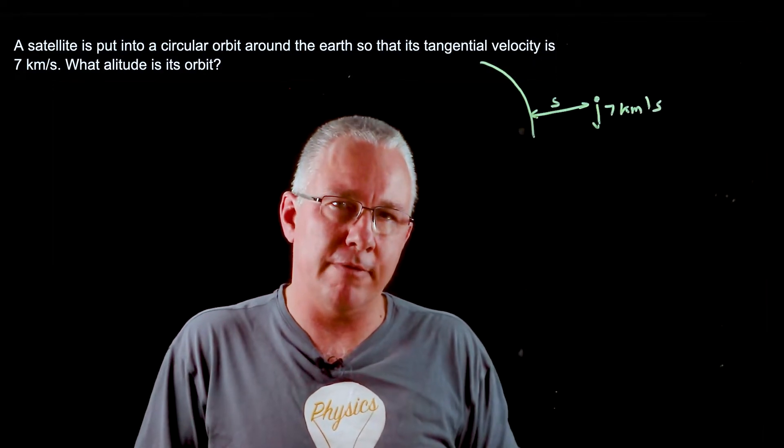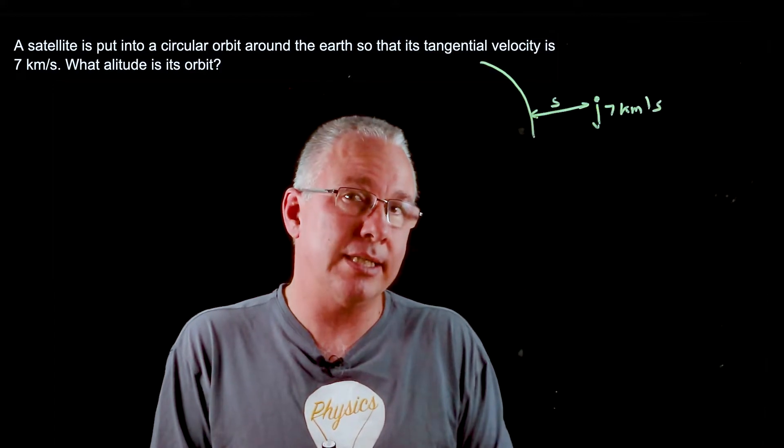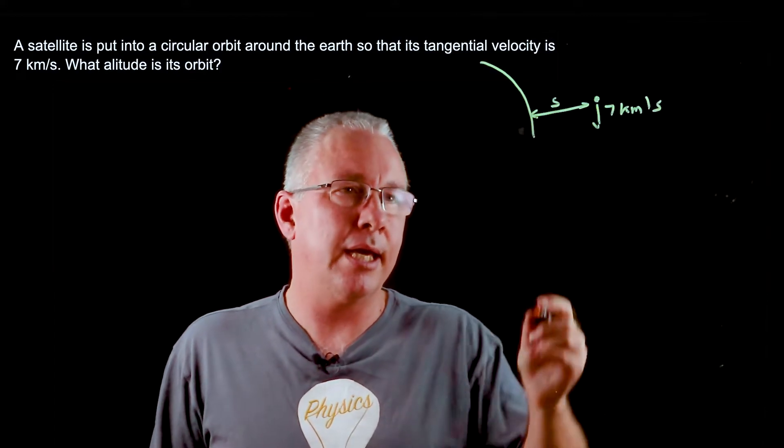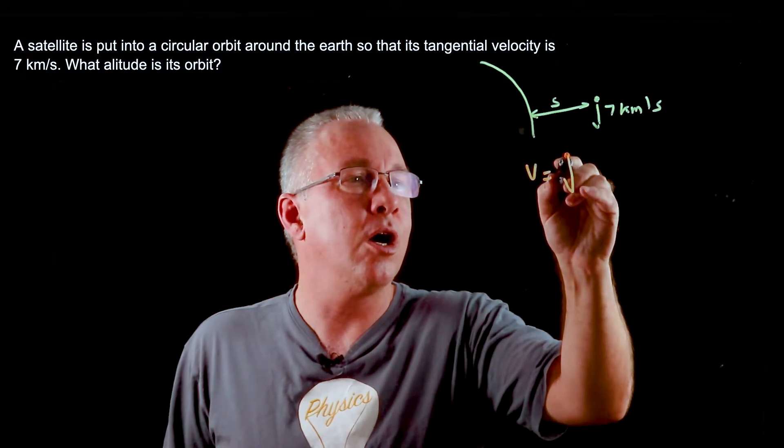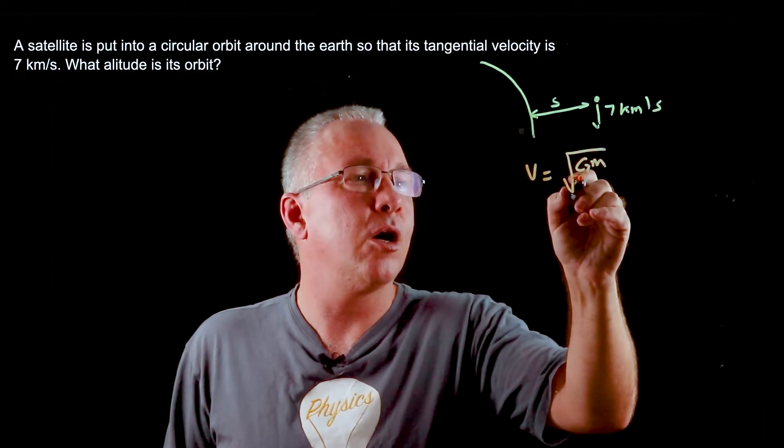So how do we go about solving that? Well the first thing to do is of course write down the formula that we know. And the formula for orbital velocity is equal to the square root of GM over r.